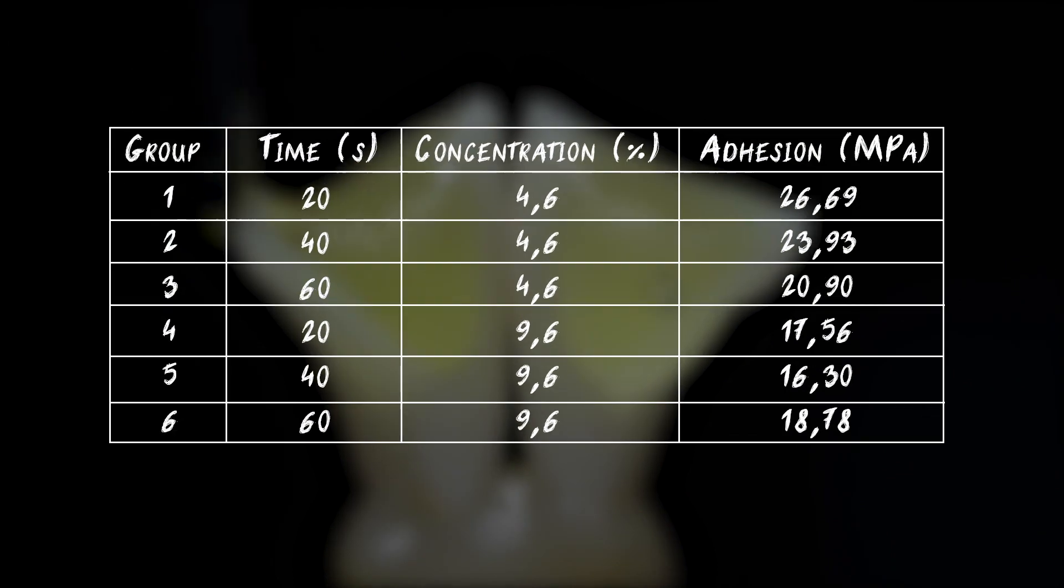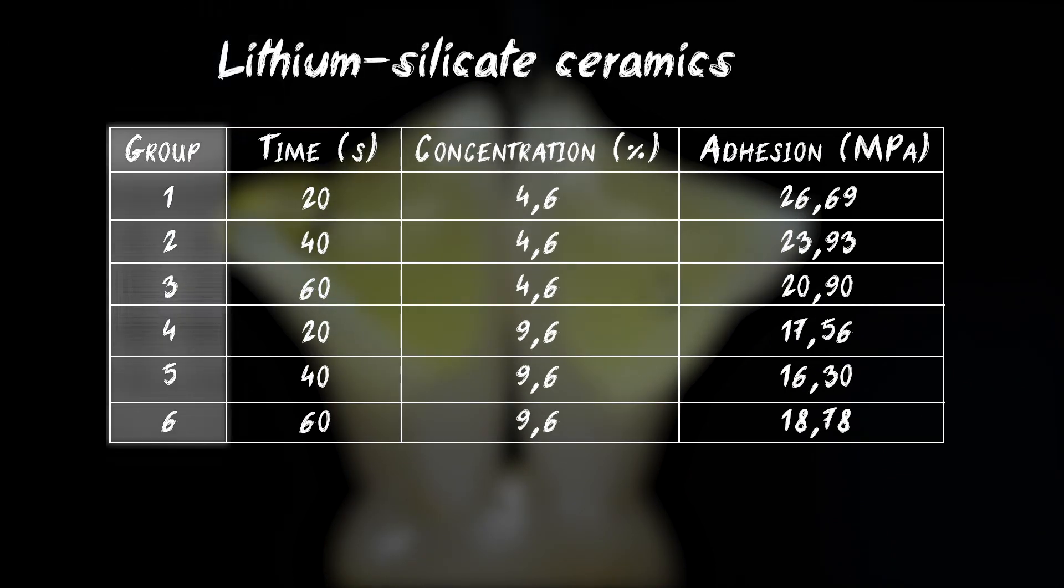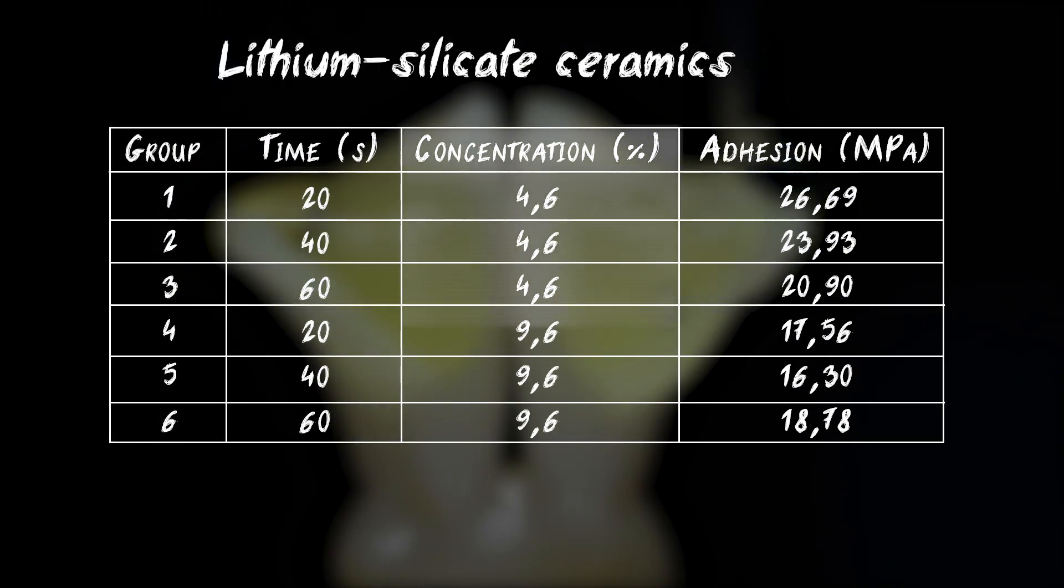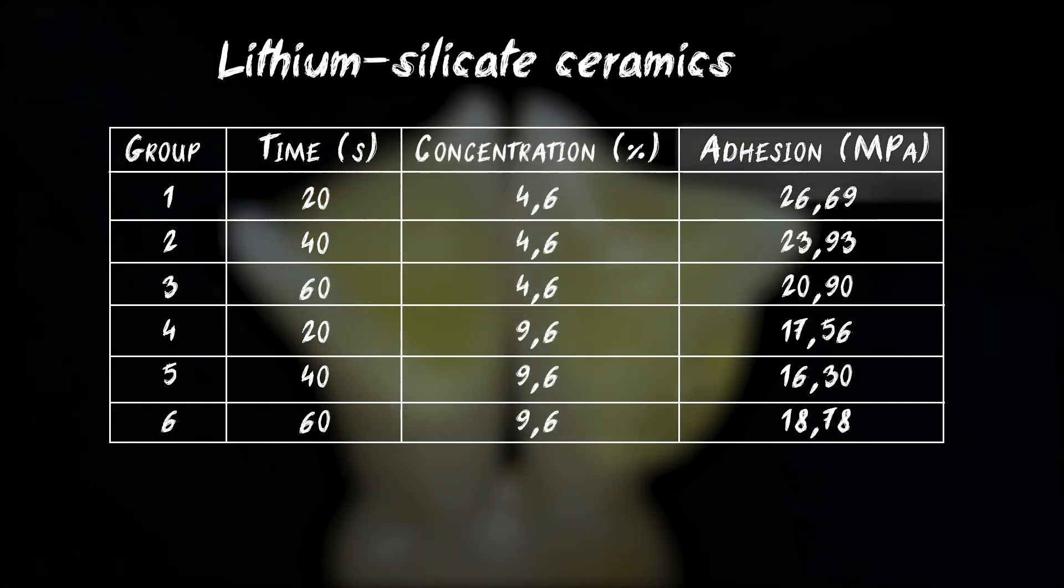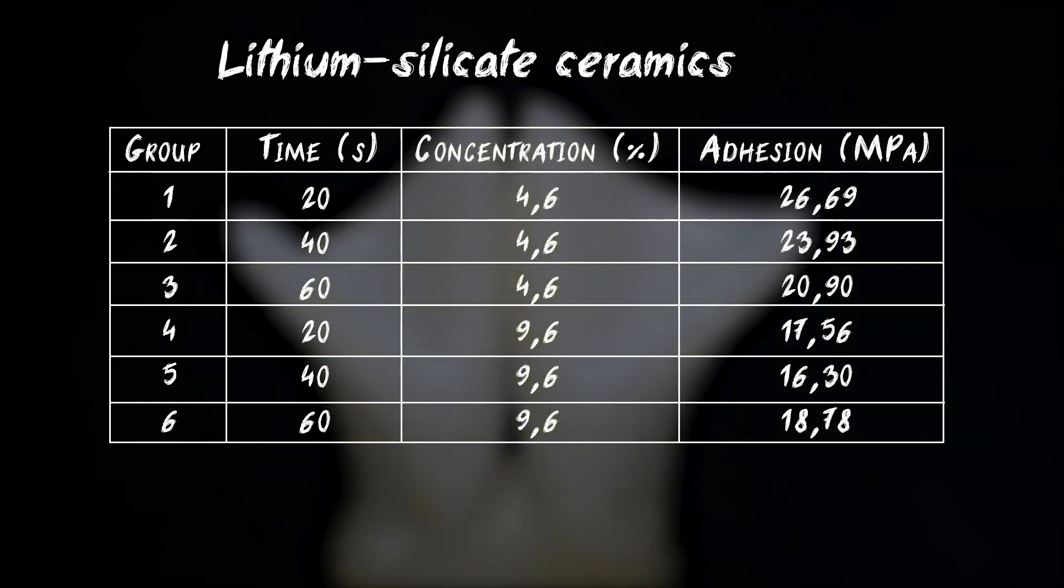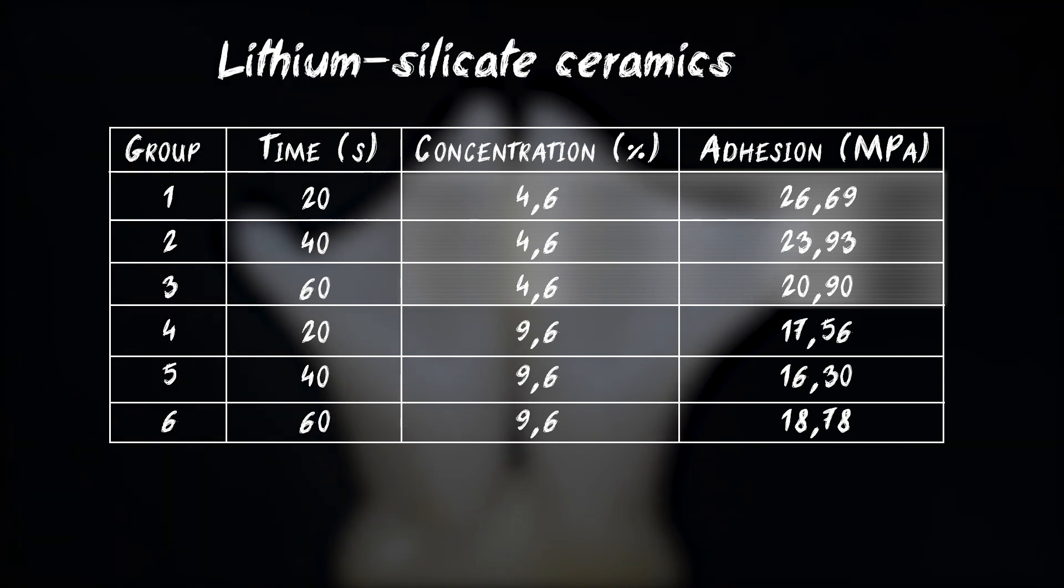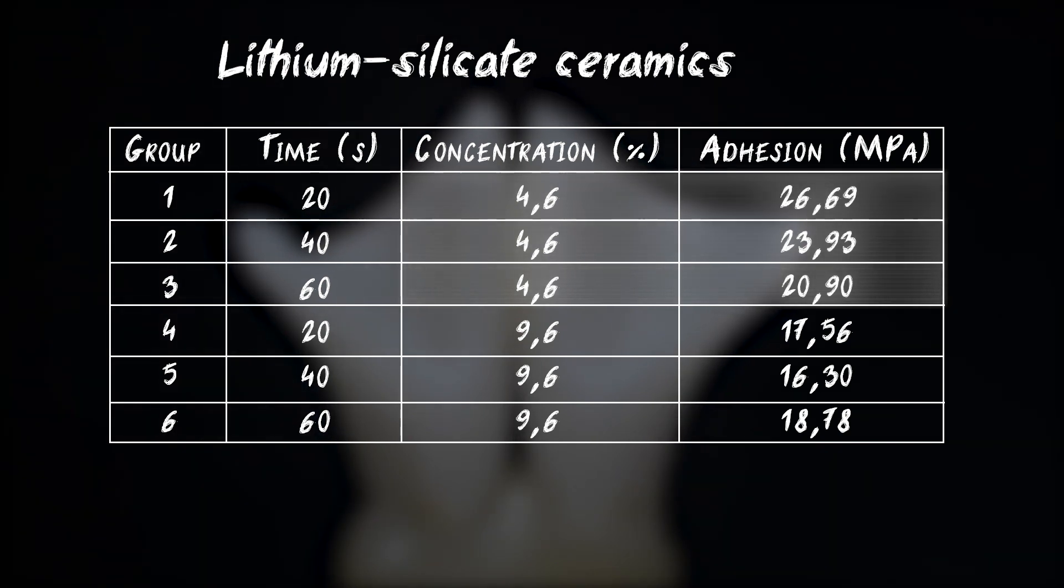Here are the results. First column is the number of the test group, second etching time, the third concentration of hydrofluoric acid and the fourth adhesion strength. As we see, the concentration of 4.6% is the most optimal for the same etching time.